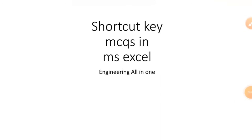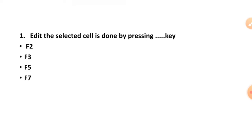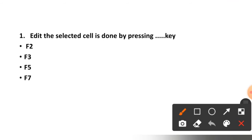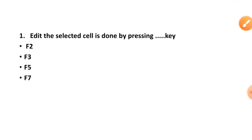Hello dear friends, welcome to my channel Engineering All-in-One. In this video we will see MCQs based on shortcut keys in MS Excel. Question number one: adding the selected cell is done by pressing which key? F2, F3, F5, or F7? The correct option is option number one, F2 key.